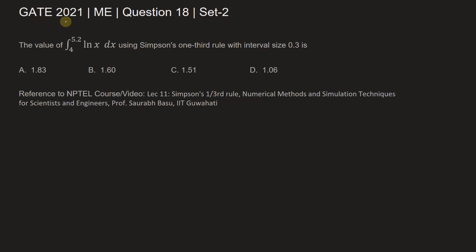The given problem is from GATE 2021 Mechanical Engineering paper, Set 2. The question asks for the value of the integral from 4 to 5.2 of ln x dx using Simpson's one-third rule with interval size of 0.3.